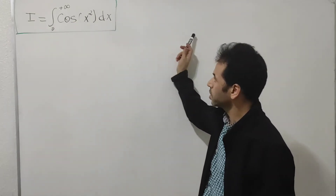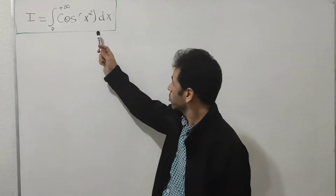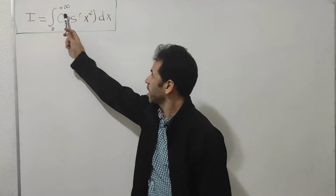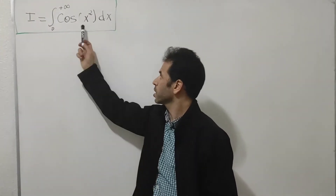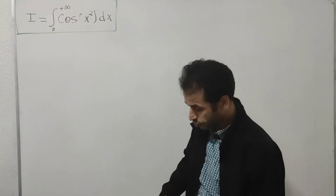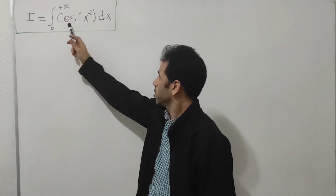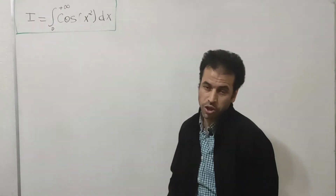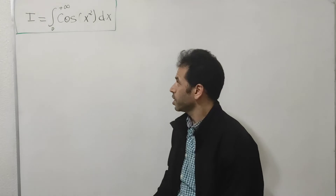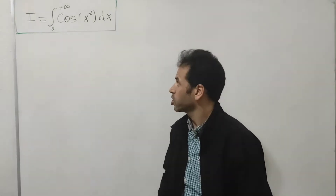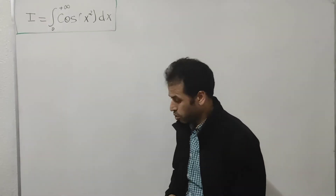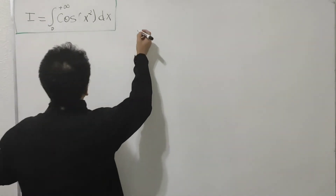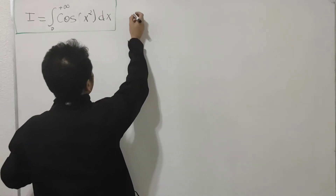I'm going to transfer this integral into the Gaussian integral form. Previously I did the similar integral with sine(x²) dx and used the Jacobian transformation as a method. If you're interested in watching that proof, I'll add the link at the end of this video in the comment section.